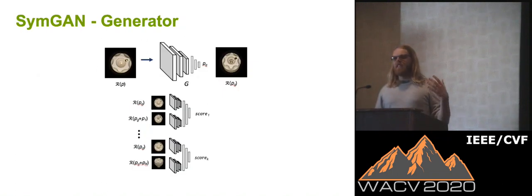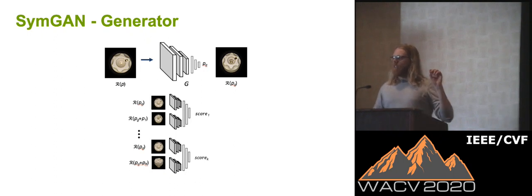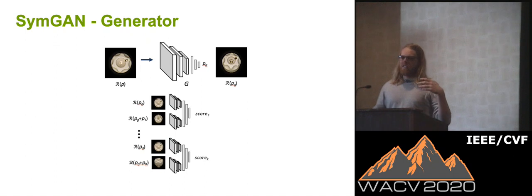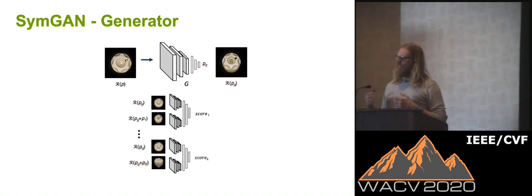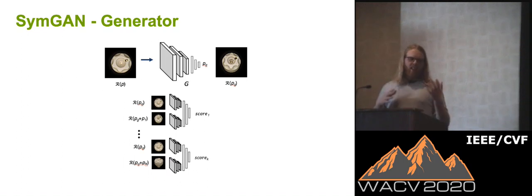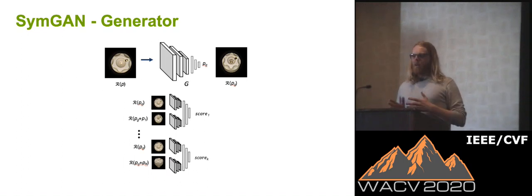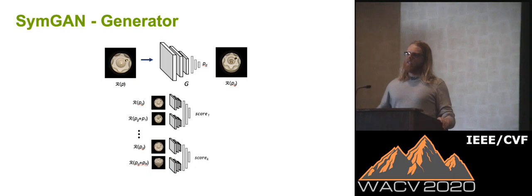Because the renderer is non-differentiable, we sample multiple poses around the generator's output in order to get a lot of signal. Given that signal, we use the maximum one that scored the highest as a target for training. This allows us to get around the problem of having non-differentiable rendering.